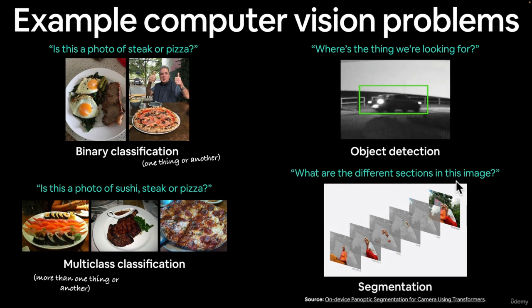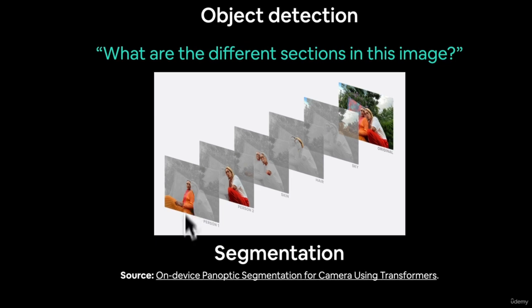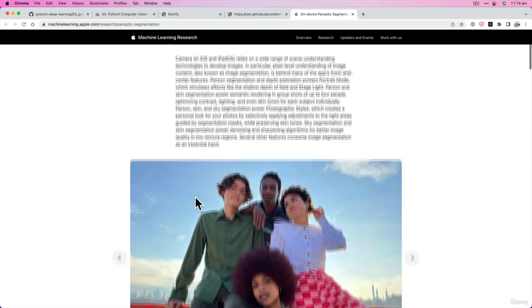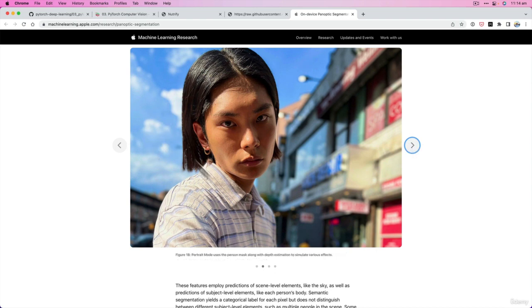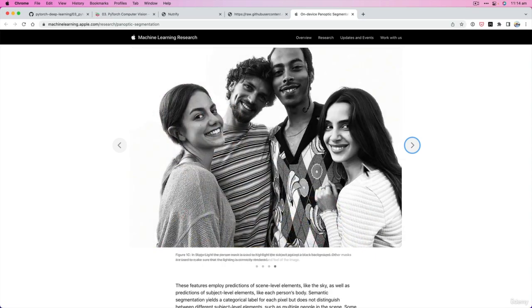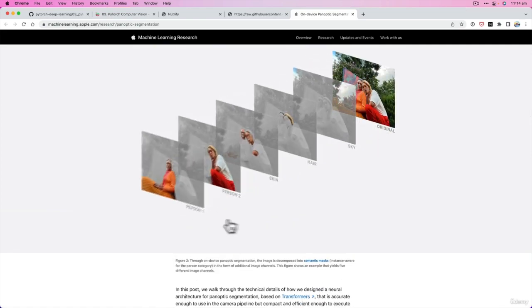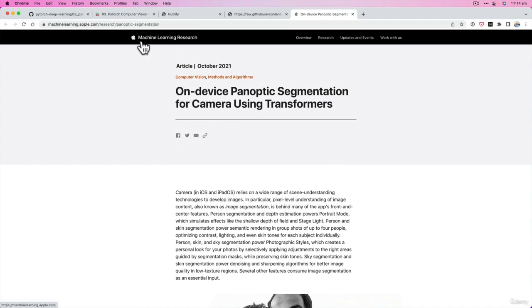Then there's image segmentation — finding what are the different sections within an image. Apple uses this on iPhones and iPads to segment different regions: person one, person two, skin tones, hair, sky, and then enhance each section differently. That's a practice known as computational photography. Apple Machine Learning Research has a great blog post about it — I'll leave that as extracurricular reading if you're interested.